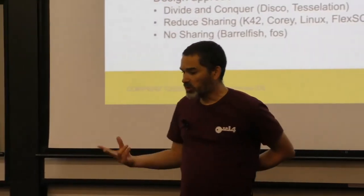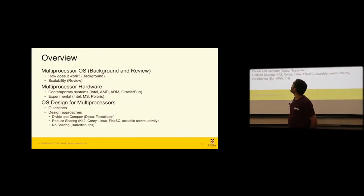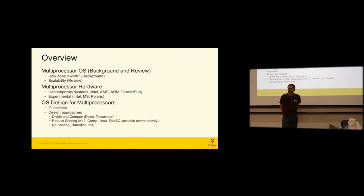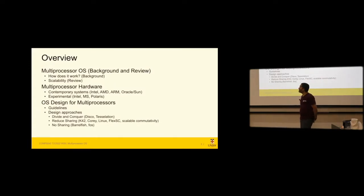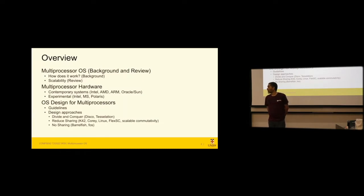A bit of an overview of this lecture — this is going to be two lectures, today and on Thursday. We're going to start with looking at what a multi-core multiprocessor OS is, some background about how it works, and some of the scalability problems. Then we'll look at the hardware these things actually run on — it's not as simple as just a machine with a bunch of processors. We'll look at contemporary hardware you can buy off the shelf, as well as experimental systems, and features from experimental hardware often trickle into contemporary hardware.